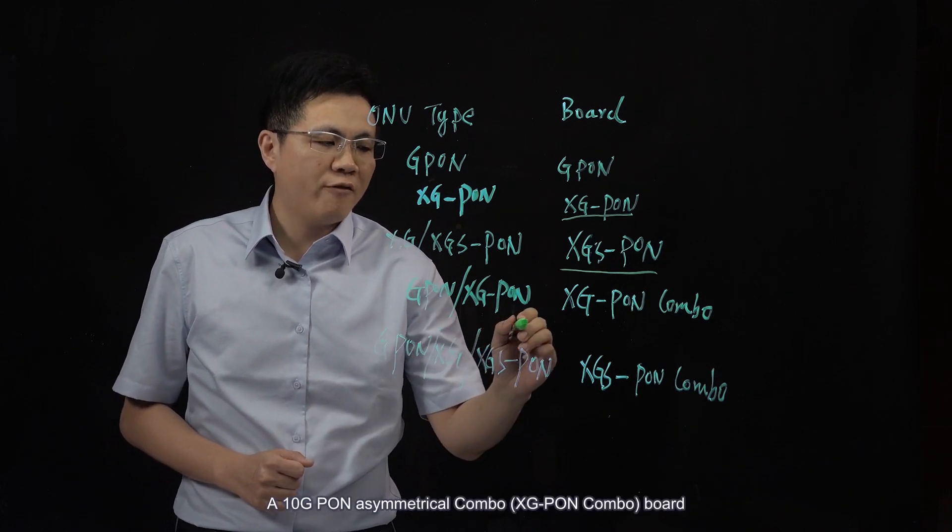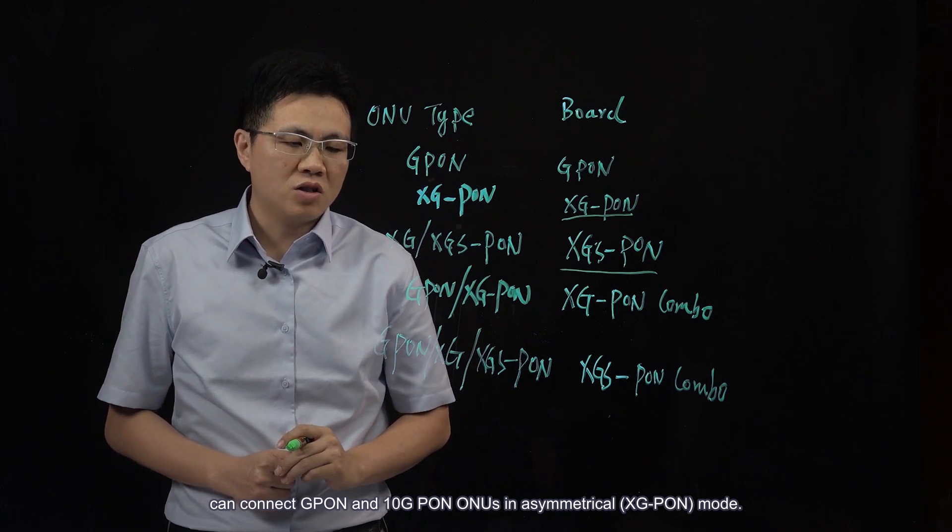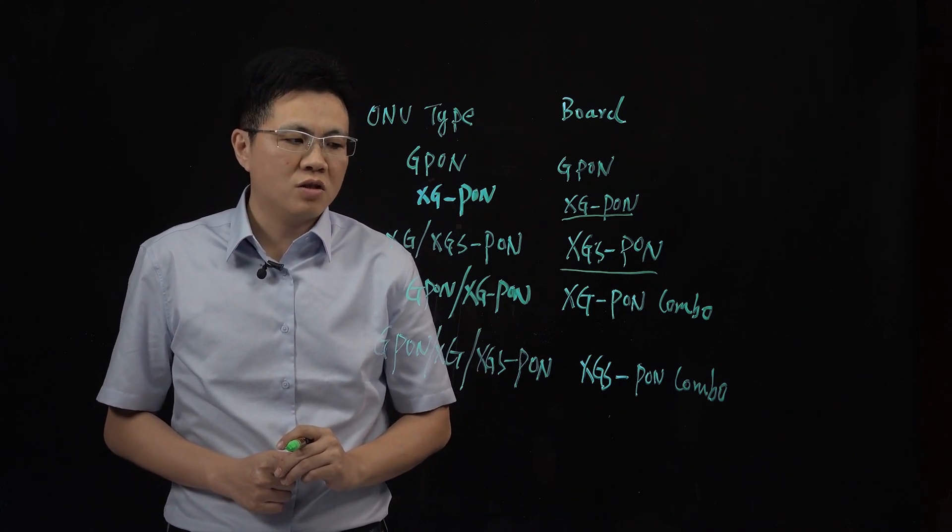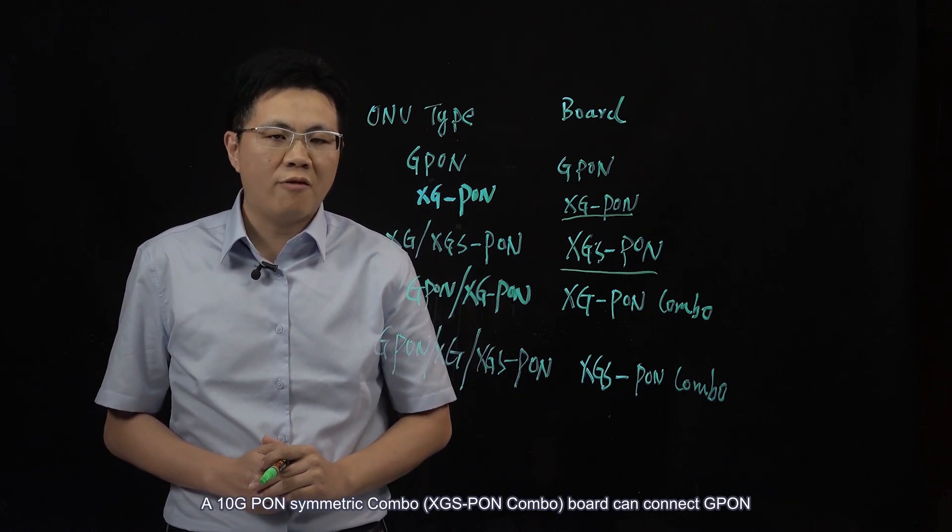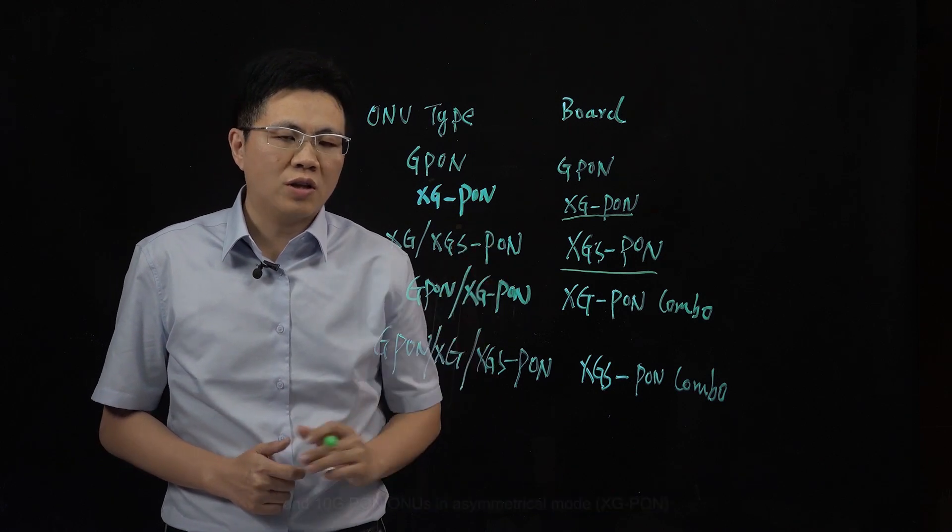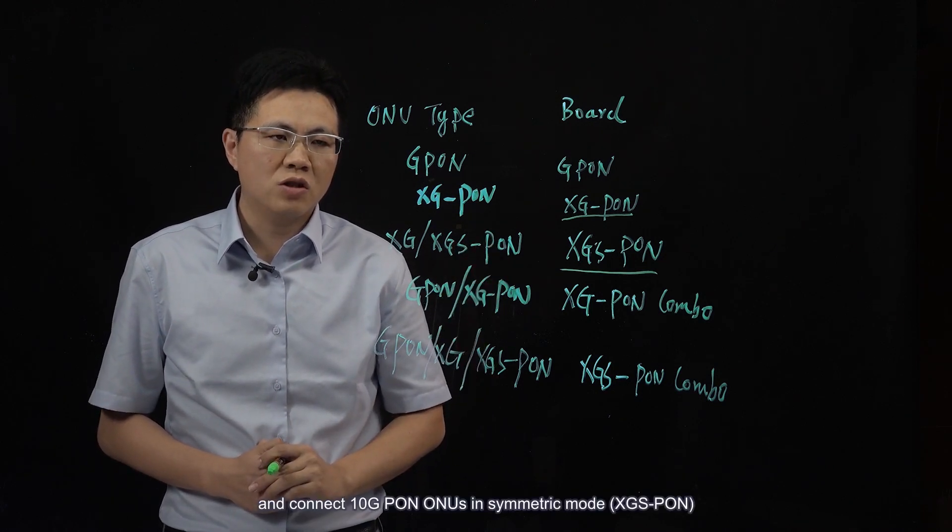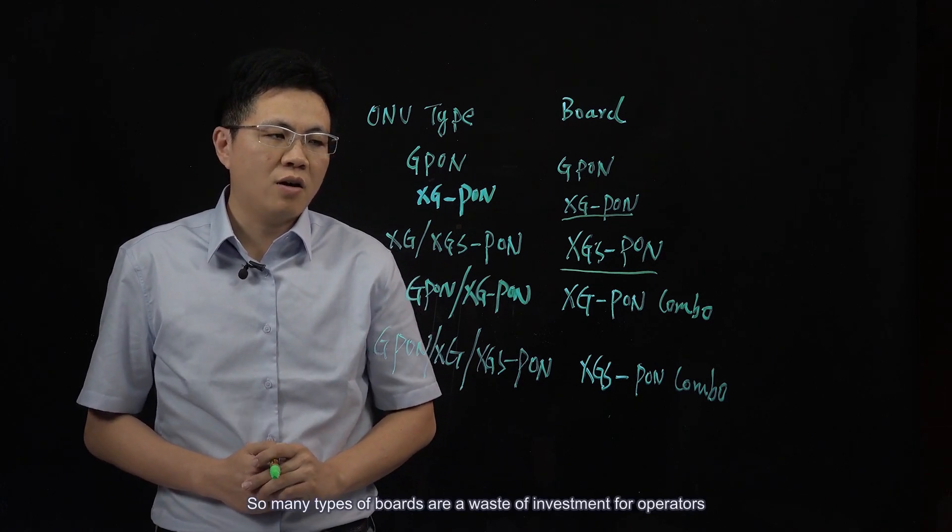A 10GPON Asymmetrical combo board can connect GPON and 10GPON ONUs in Asymmetrical mode. A 10GPON Symmetric combo board can connect GPON and 10GPON ONUs in Asymmetrical mode and connect 10GPON ONUs in Symmetric mode. So many types of boards are a waste of investment for operators.